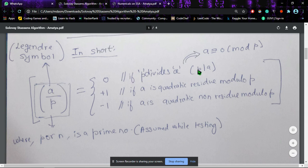...or you can also say that a is congruent to 0 mod p—that is, p divides a. The second condition is plus 1 if a is a quadratic residue modulo p.